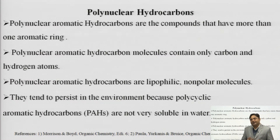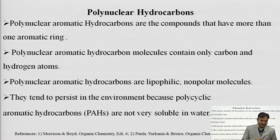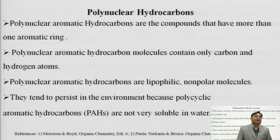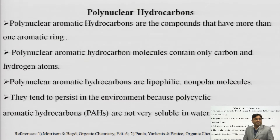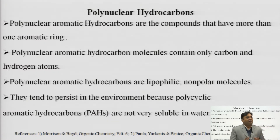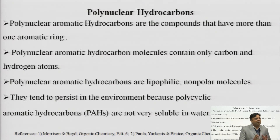Polynuclear hydrocarbons have more than one cycle or nucleus in their structure, and hydrocarbons means hydrogen and carbons are present. So these are compounds which have more than one cycle or nucleus in their structure and consist of hydrogen and carbon atoms. Polynuclear hydrocarbons are compounds that have more than one aromatic ring. They are also known as polycyclic aromatic hydrocarbons - in short form, PAH.